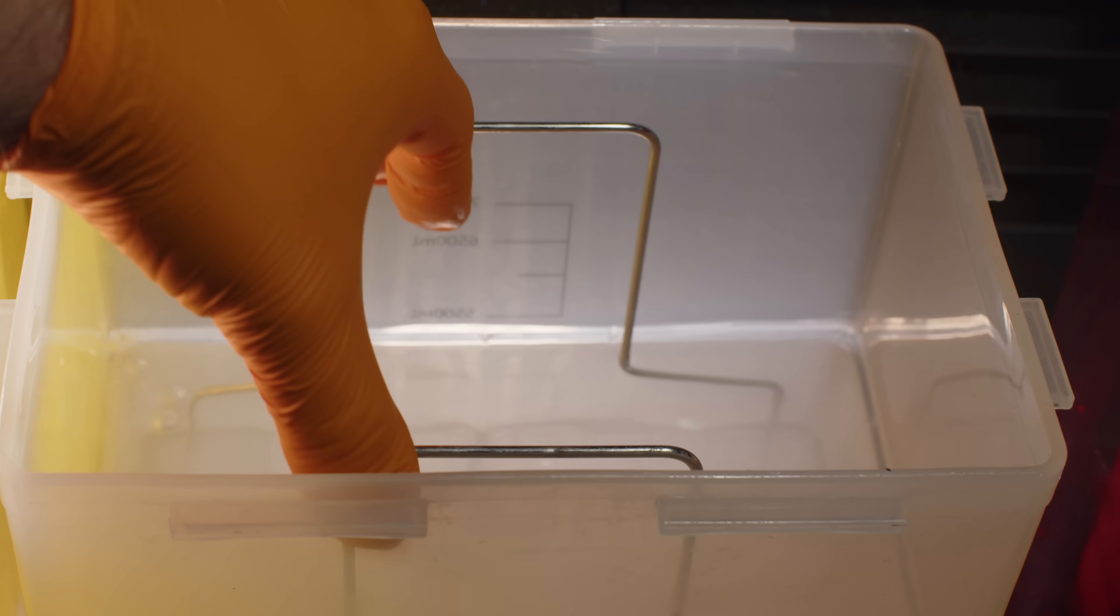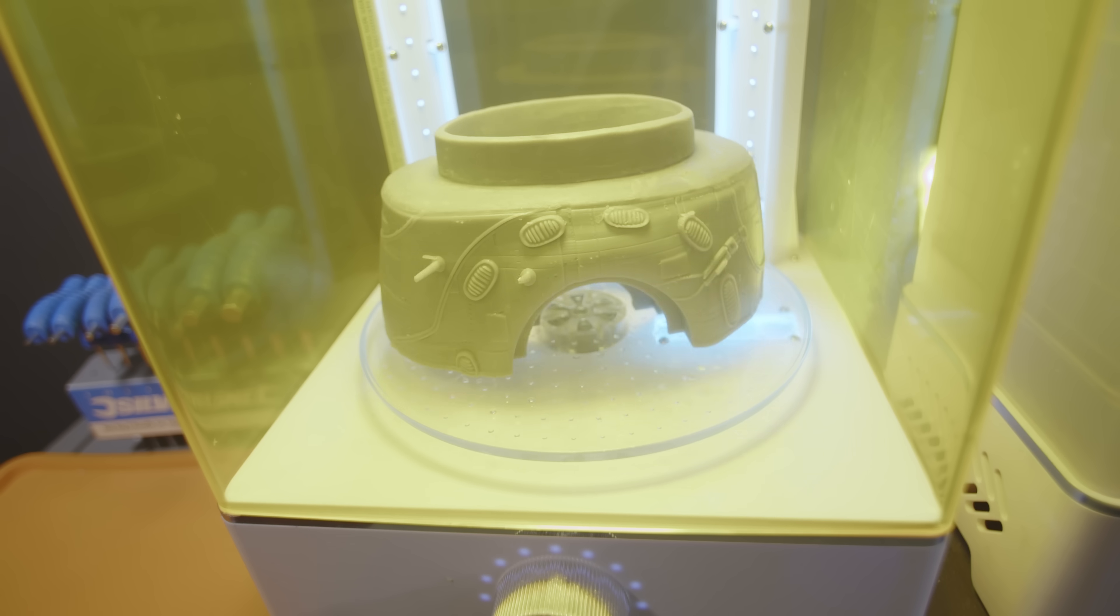Now Elegoo was super cool and extremely kind in gifting us a Saturn II 8K resin printer and a Mercury X wash and cure station. Now what this kit allows us to now do is very efficiently turn around 3D printed parts, wash them, cure them, have them ready for the paint process. Now these machines have been pretty much on solidly for the last few weeks since receiving them, and I have to say I'm very impressed with the results.